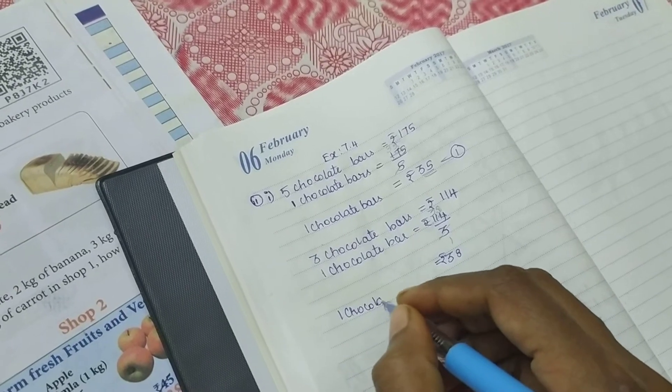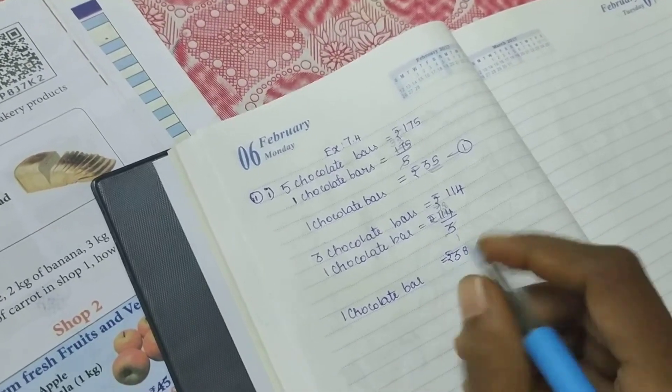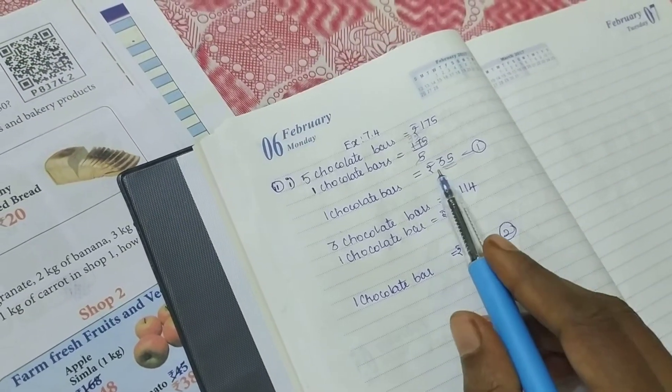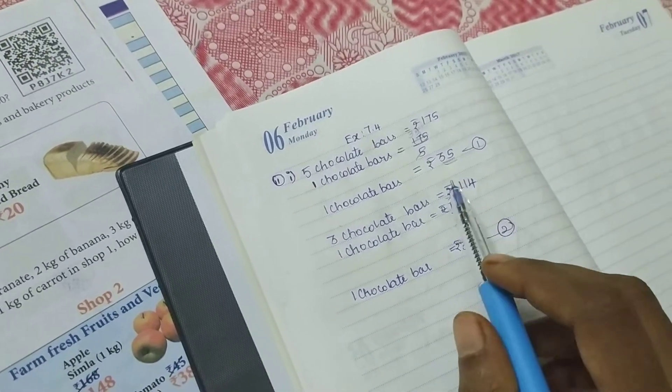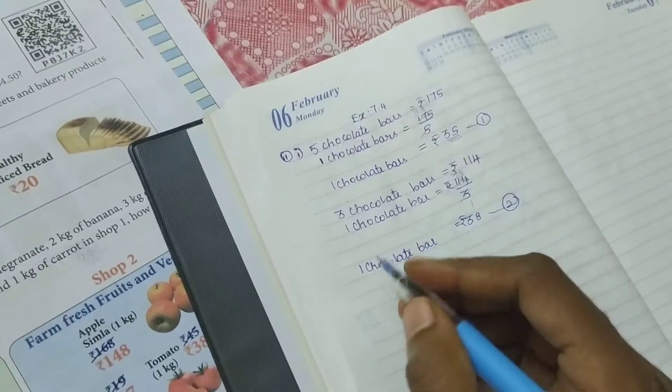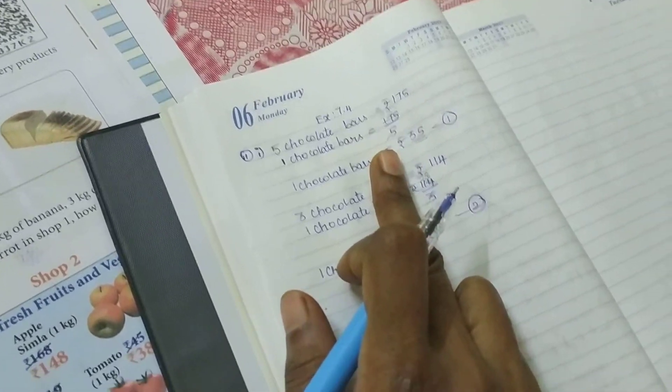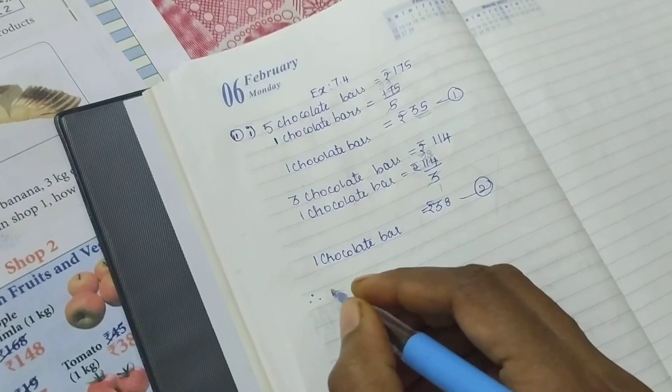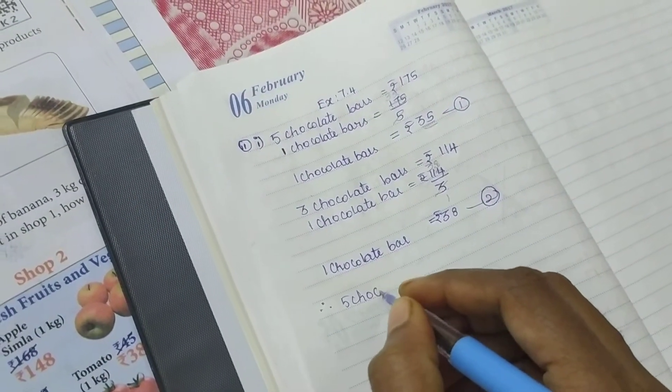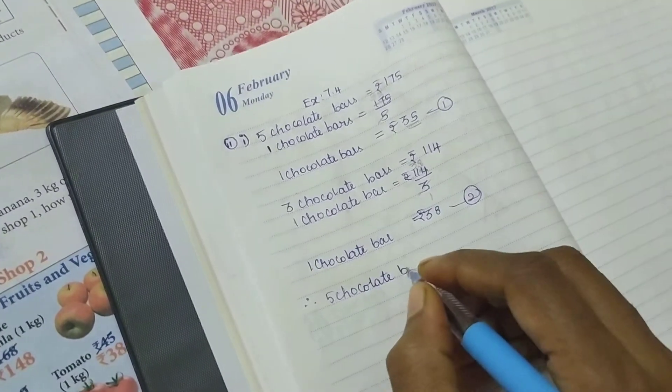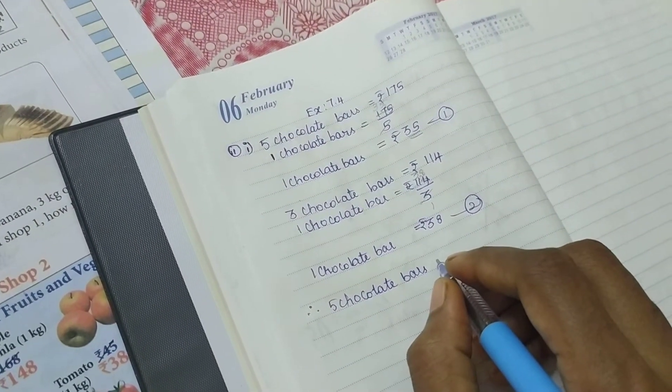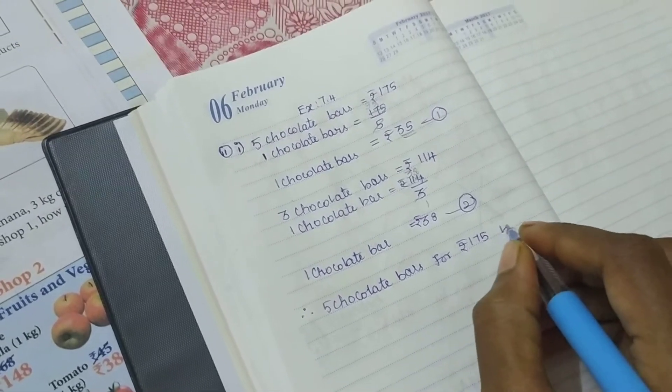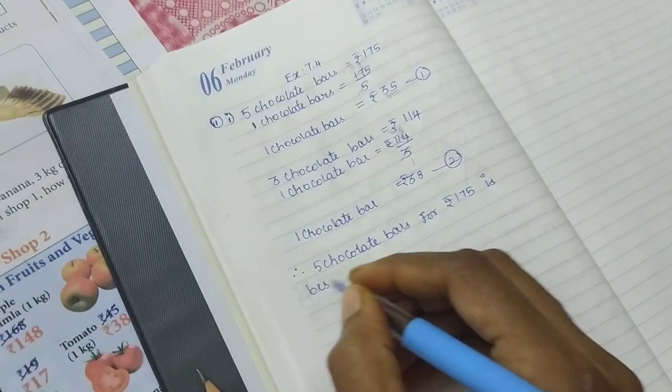Which one costs less rupees? This chocolate at 35 rupees is cheaper. Therefore, when comparing these, if you're buying something, it should be cheaper. The five chocolate bars for rupees 175 is the best to buy.